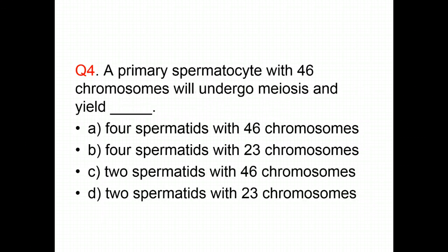Question 4: A primary spermatocyte with 46 chromosomes will undergo meiosis and yield — choose the correct answer.